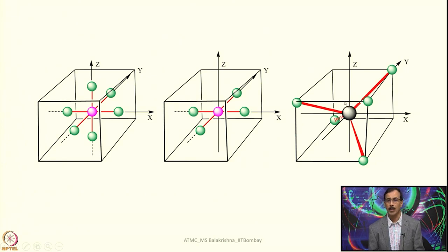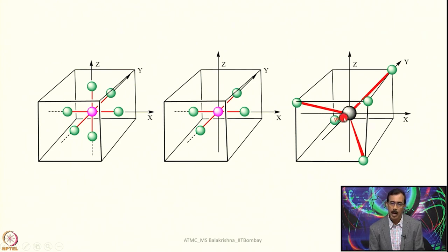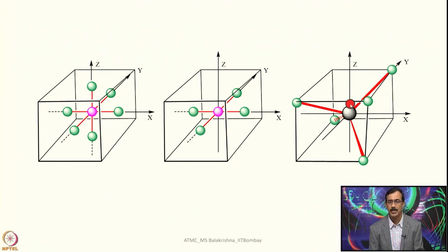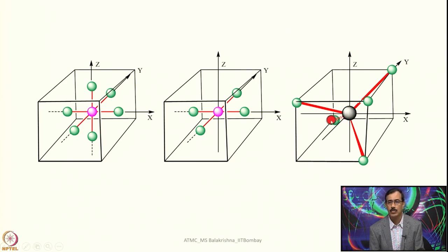Now let us consider the tetrahedral complex, in which 4 ligands occupy alternate corners of a cube. These 4 ligands approach the metal from alternate corners, and when they approach and establish bonds we end up with a regular tetrahedron. In this case, if we place all 5 orbitals along the Cartesian coordinates, we notice clearly that d z² and d x²-y² are not overlapping directly with any of these 4 ligands. In contrast, d xz, d yz, and d xy have a slightly larger overlap with the direction of approach of the ligands.